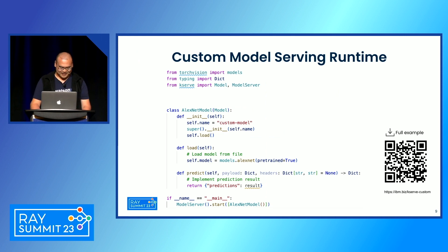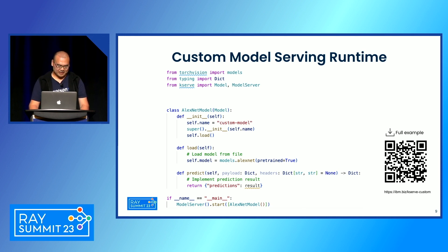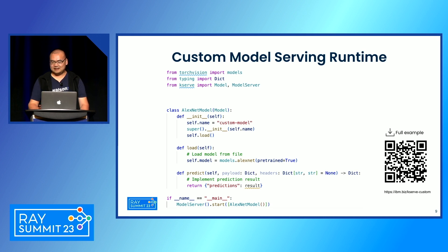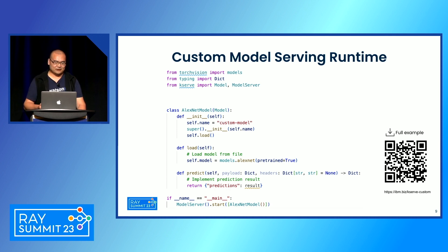Let's look at some code. This is a code snippet for a KServe custom model serving runtime. For KServe, you just need to implement two handlers: the load function, which loads a model from somewhere into memory, and the predict function, which processes your logic and returns the prediction result. There is a QR code you can use to download the full version of this code and run it as a regular Python service, and you can send requests to this custom runtime and get results back.